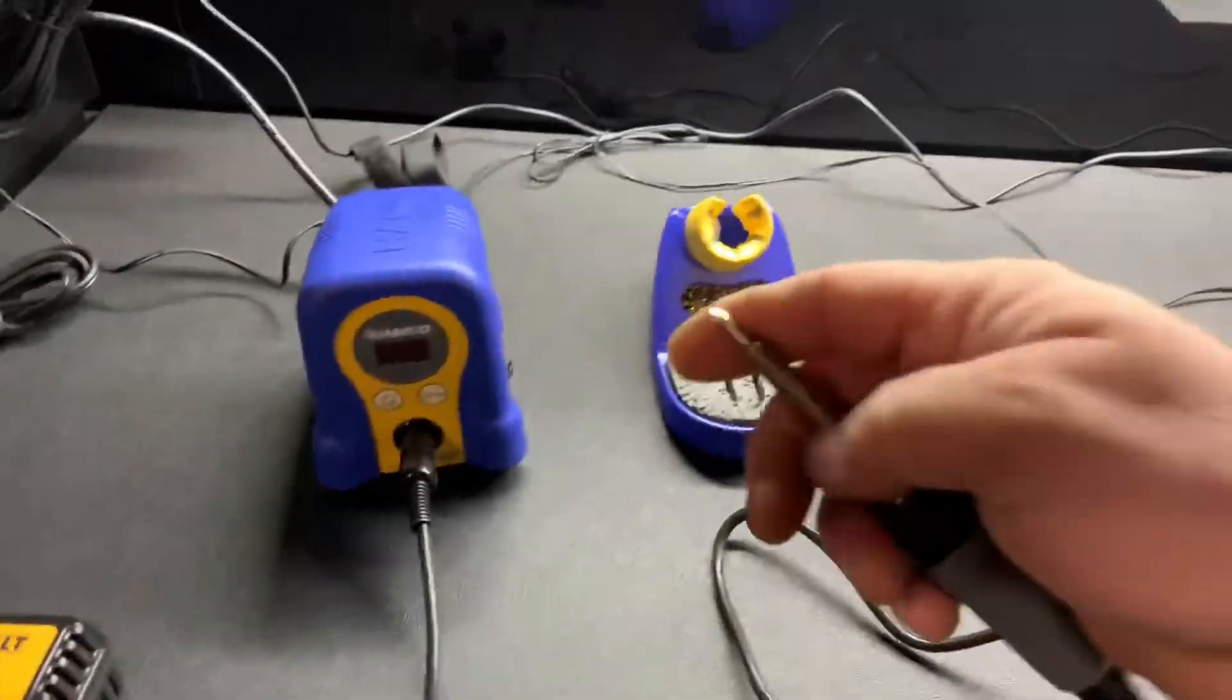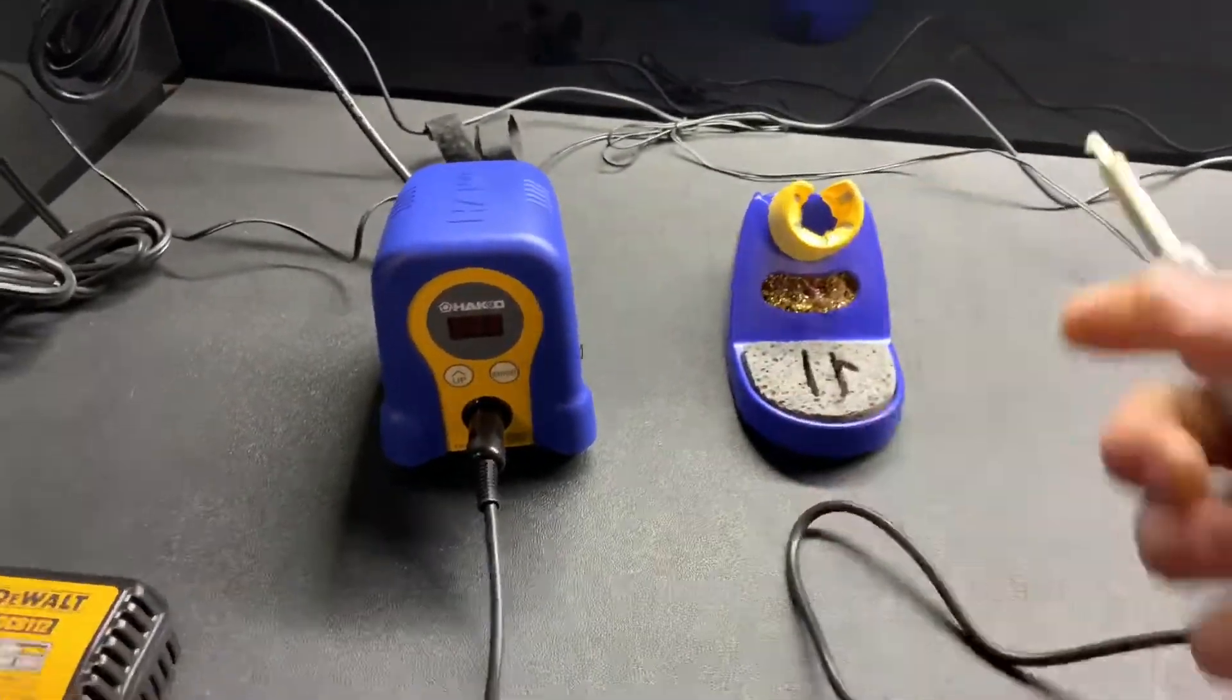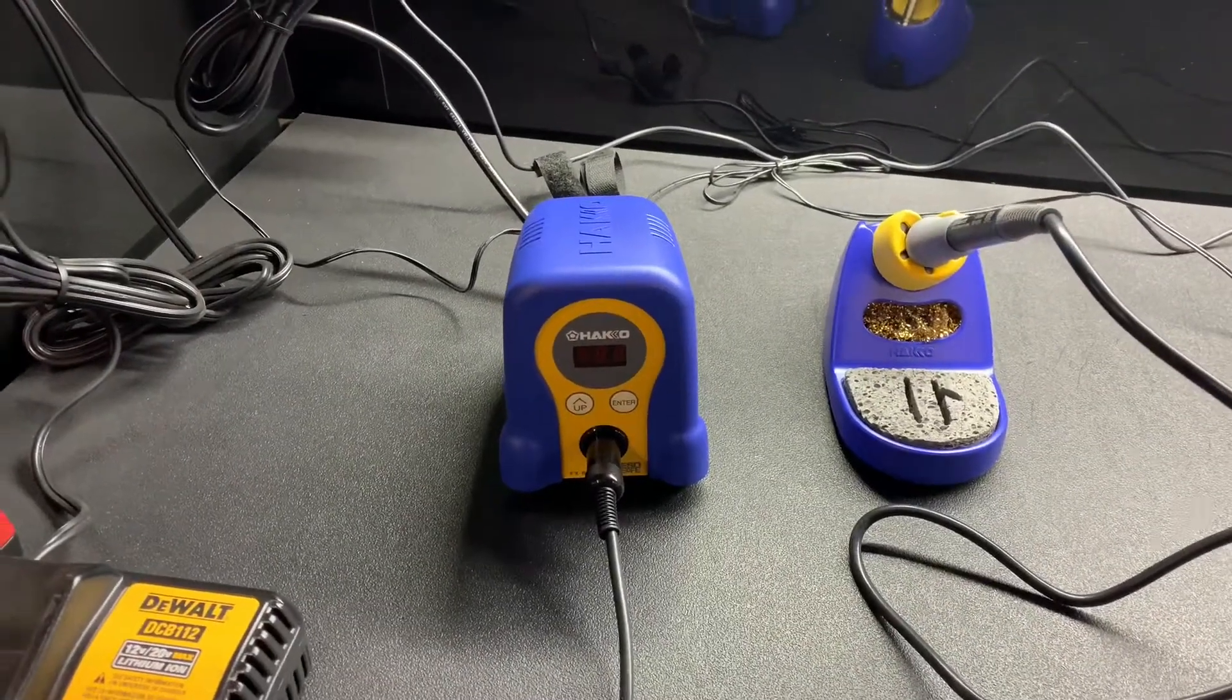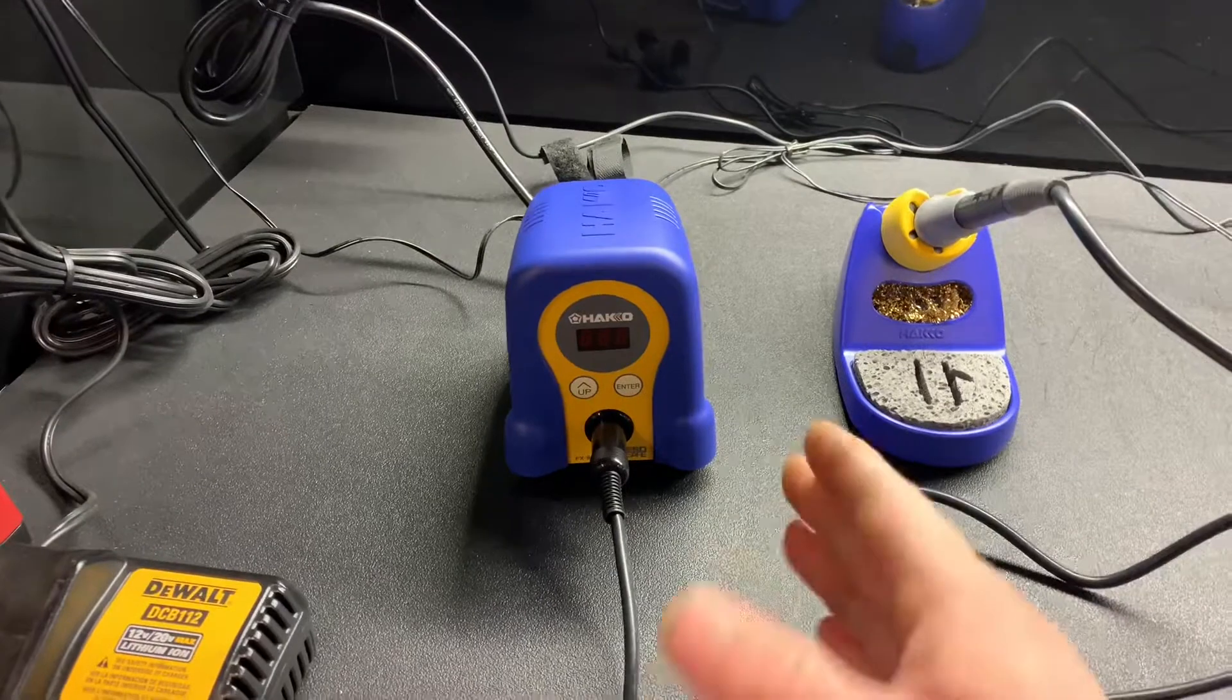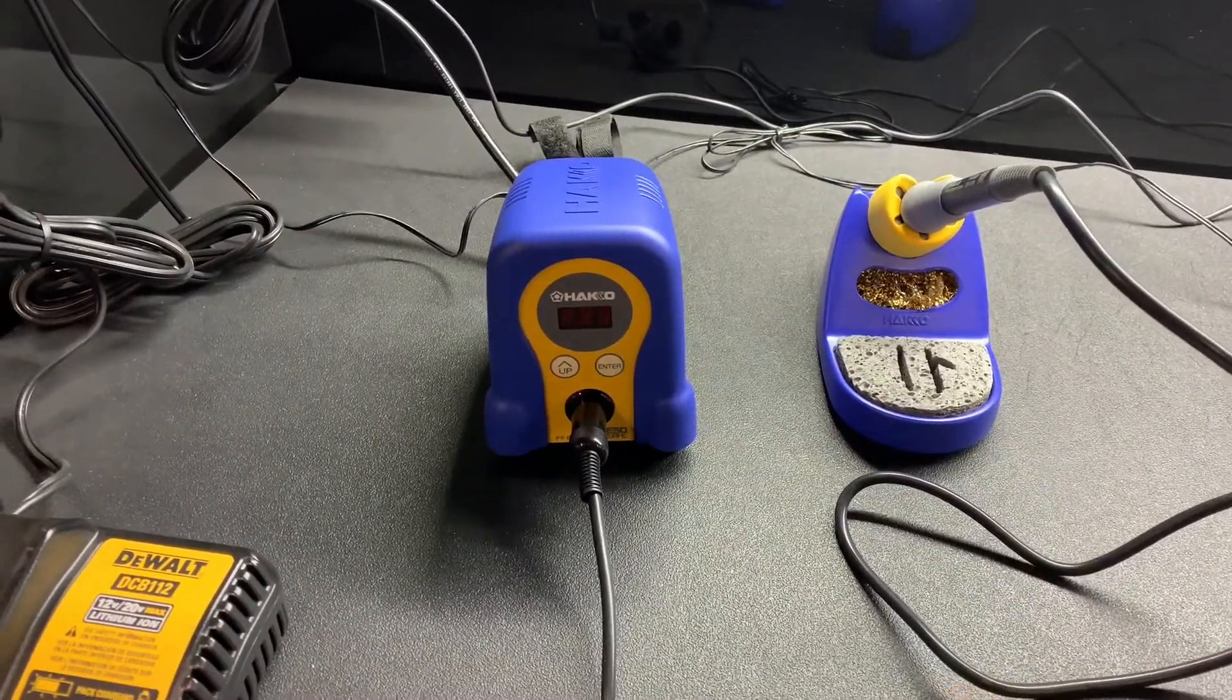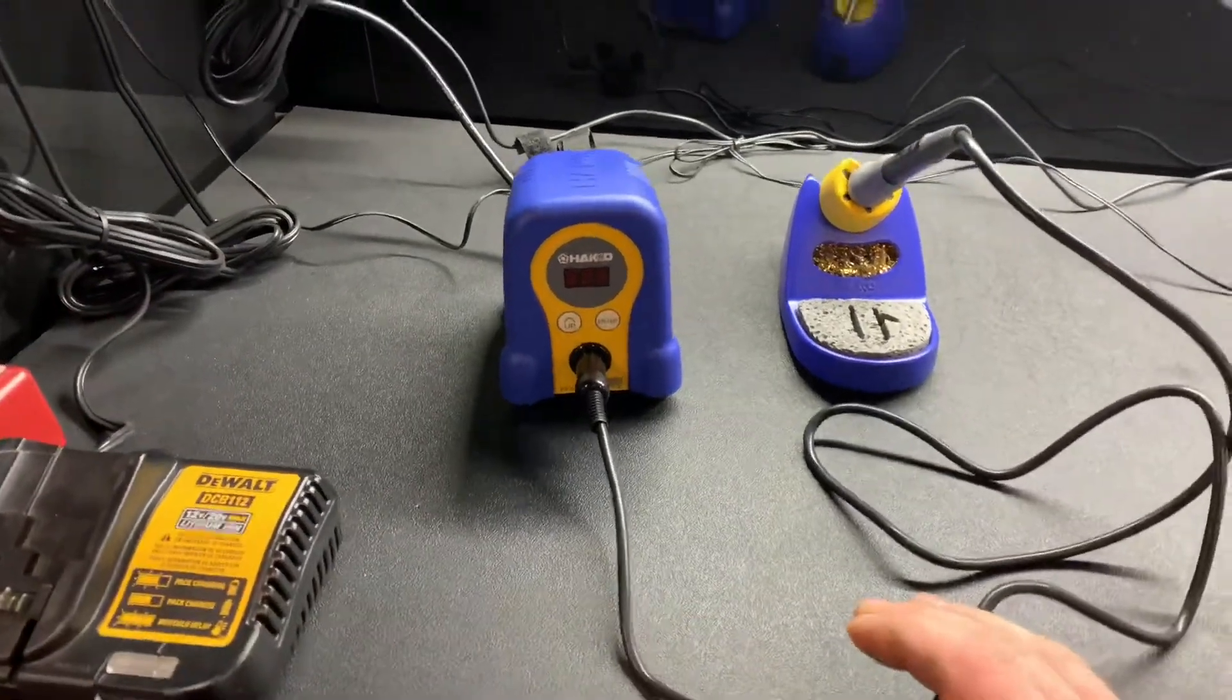As you can see right now, the soldering iron is cold so I will turn it on and I will show you how fast this thing heats up. It comes preset to 750 degrees so I'll show you how fast this thing actually does get up to temp.